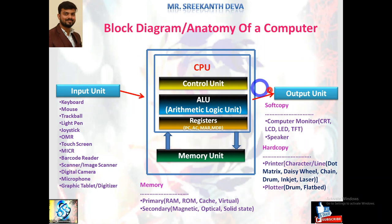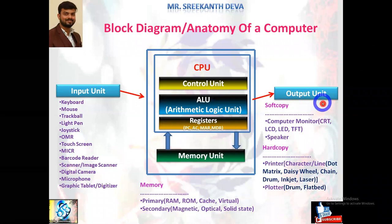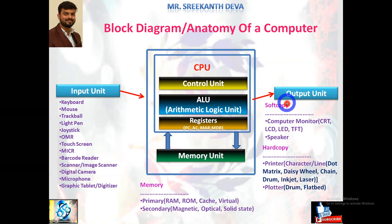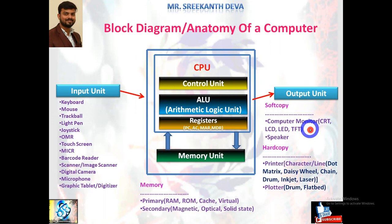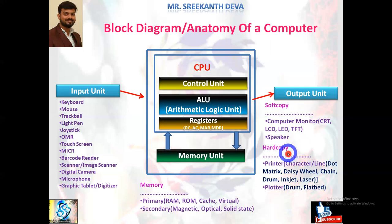Processed information is passed to several output devices called output units, in the form of soft copy and hard copy. Soft copy output devices include computer monitors — CRT (cathode ray tubes), liquid crystal displays, light emitting diodes, thin film transistors — and speakers for audio output like voice or music. Hard copy output devices include printers such as character printers, line printers, dot matrix, daisy wheel, chain printers, drum printers, inkjet printers, laser printers, and plotters like drum plotters and flatbed plotters.